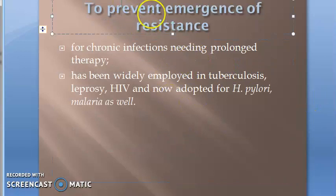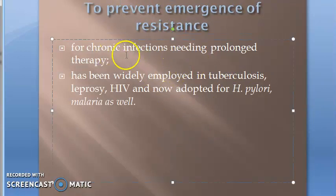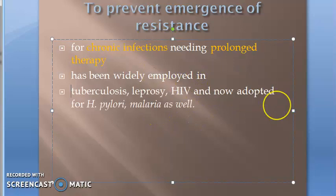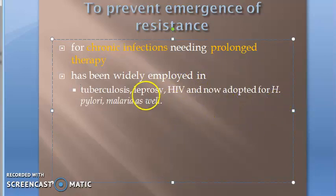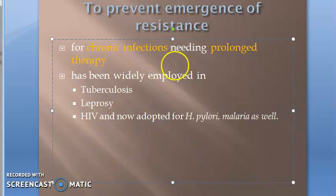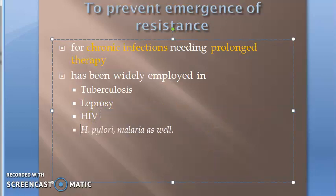The third objective is to prevent the emergence of resistance. For chronic infections requiring prolonged therapy, combinations are used. This approach is employed in tuberculosis, leprosy, HIV — all needing long-term treatment. Nowadays, combinations are also used for H. pylori and malaria.